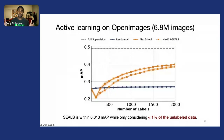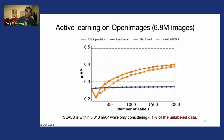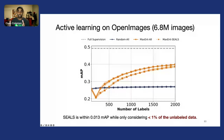As we increase the dataset size—moving to Open Images, which at the time of this work had 3.8 million examples—SEALS again achieves very similar mean average precision, but now we only need to look at 1% of the unlabeled data. So even a baseline approach like max entropy gets a 50x speedup.